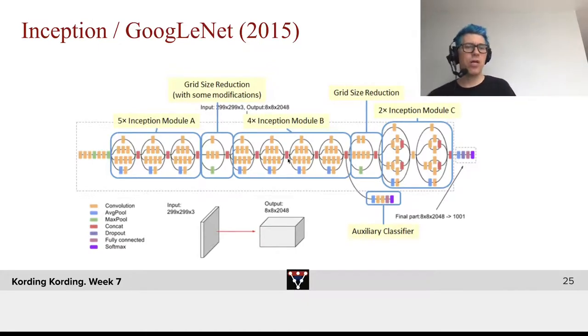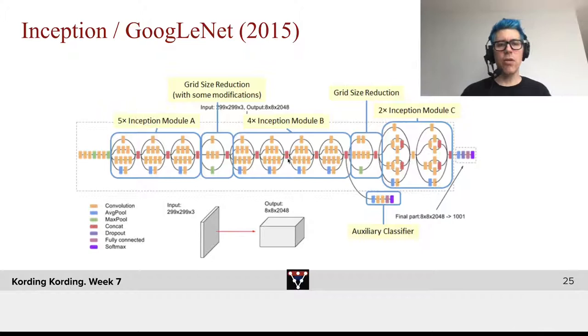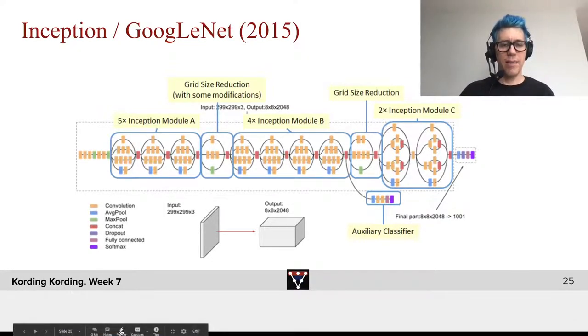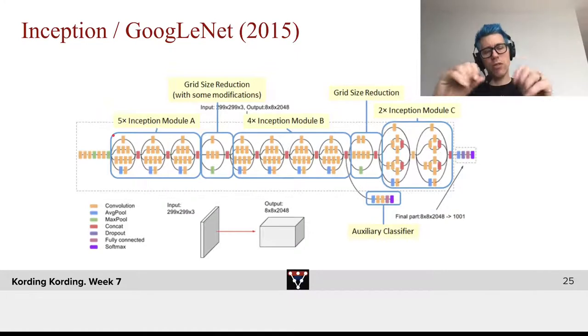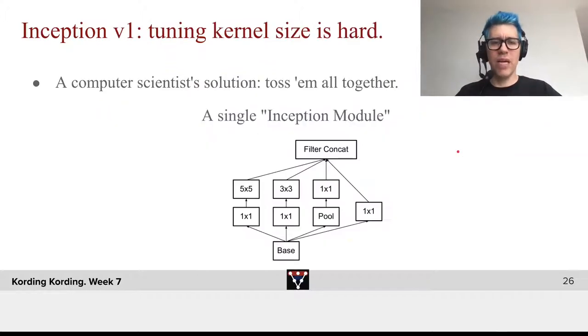Next came GoogleNet. GoogleNet uses the so-called inception modules. It basically replaced individual layers, where we do a 3x3 convolution with a 2x2 max pool, with these little inception modules. The architecture has inception modules, a grid size reduction with some tricks, another set of inception modules, and then finally a big readout.